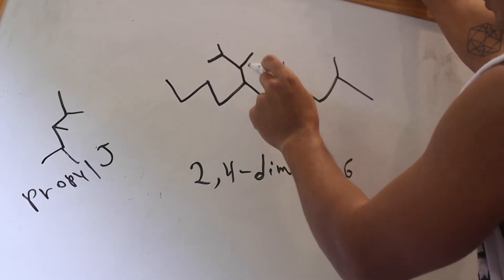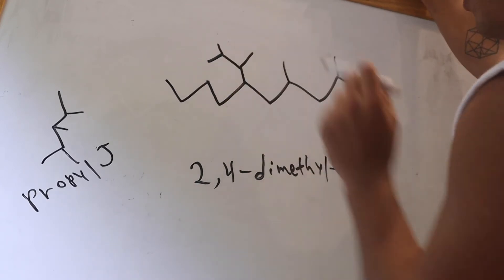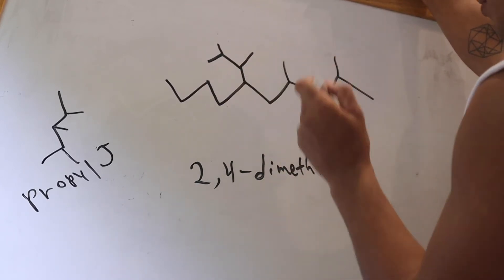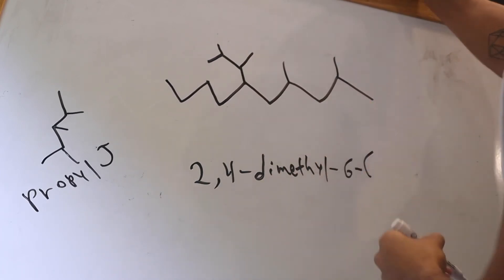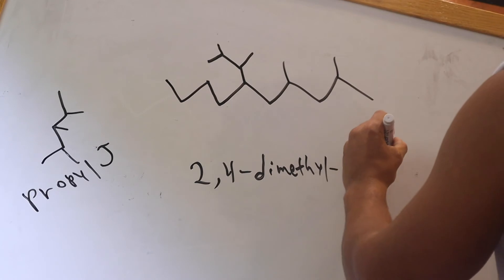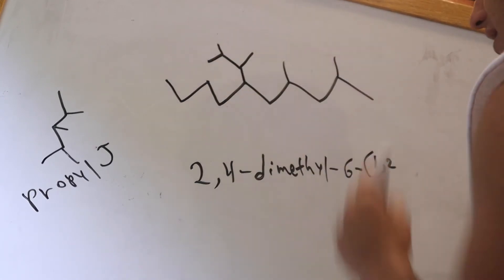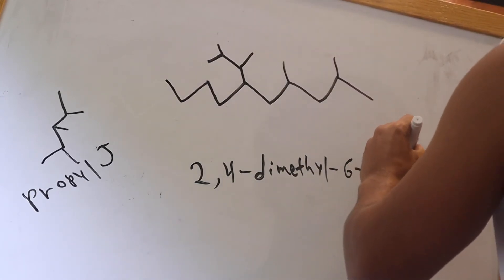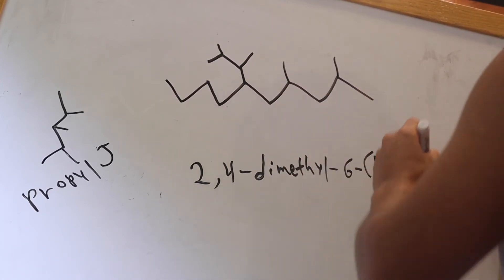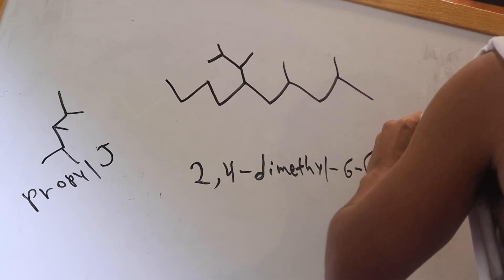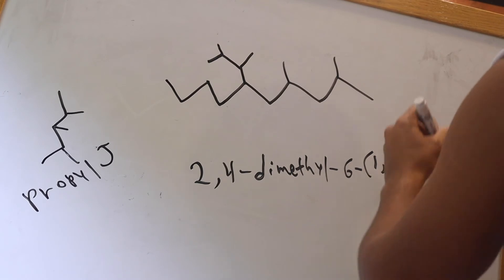But on the first carbon and second carbon, you're going to go 1, 2 because on the first carbon and second carbon you have yet another dimethyl, or you have a methyl in carbon 1 and a methyl in carbon 2. So it's dimethyl propyl.